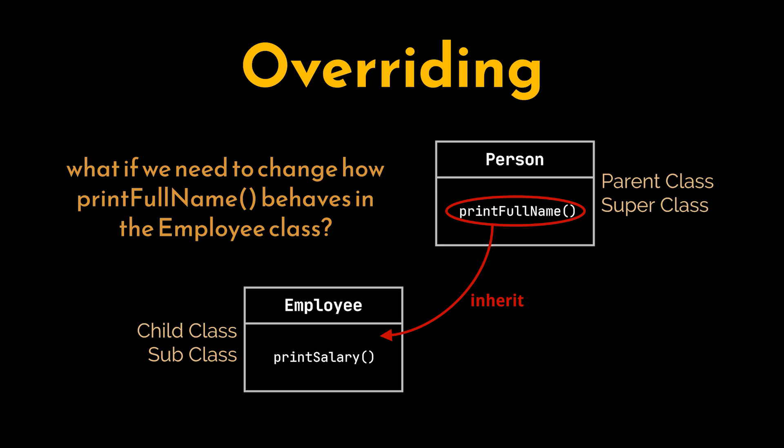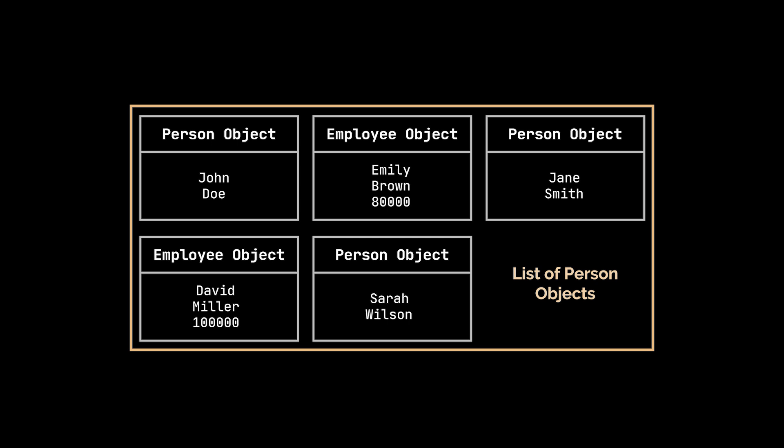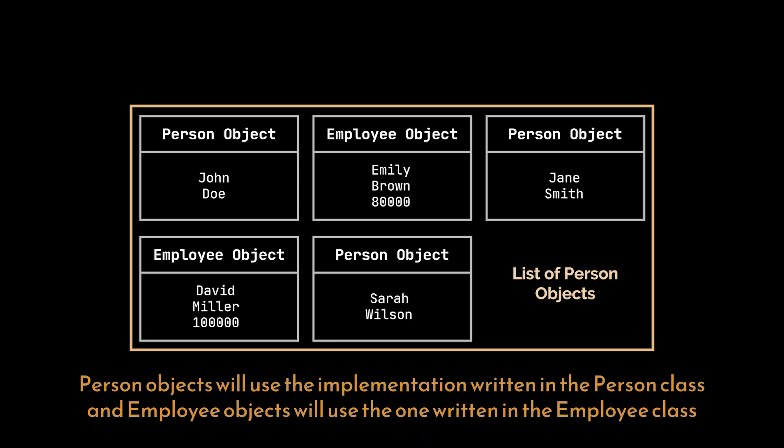Okay, let's suppose we have a list of person objects. And based on what we just learned, an employee is also a person, so the list may contain person objects as well as employee objects. Now, if we randomly select an object from this list and invoke an overridden behavior, will it use the implementation written in the person or employee class? Well, it depends on the class. If it is a plain person object, then it will use the implementation written in the person class. And if it is an employee object, it will use the one written in the employee class, which is the more specialized behavior.